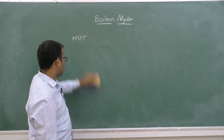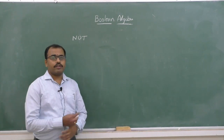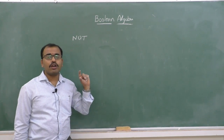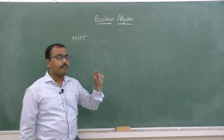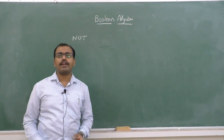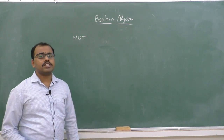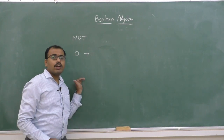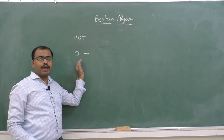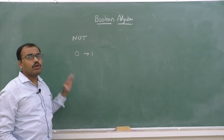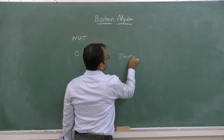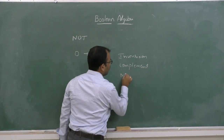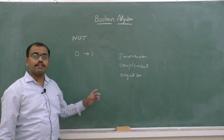Let us first study the NOT operation. Logical NOT is a unary operator — it operates on one number. The NOT operation provides the complement of the input. It gives the inversion, complement, or negation of the input.